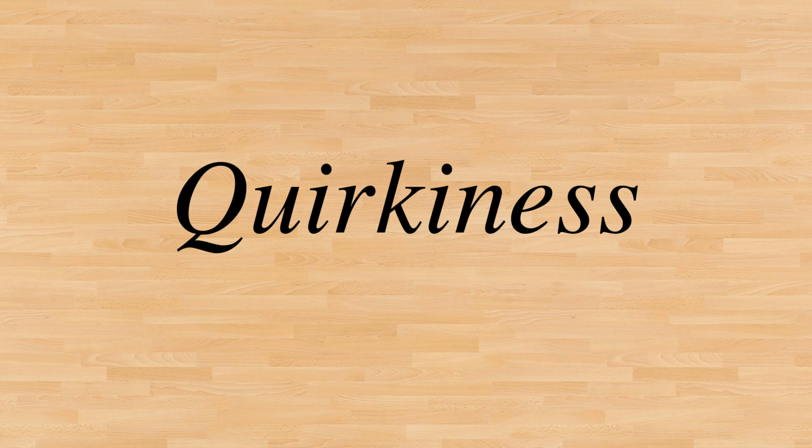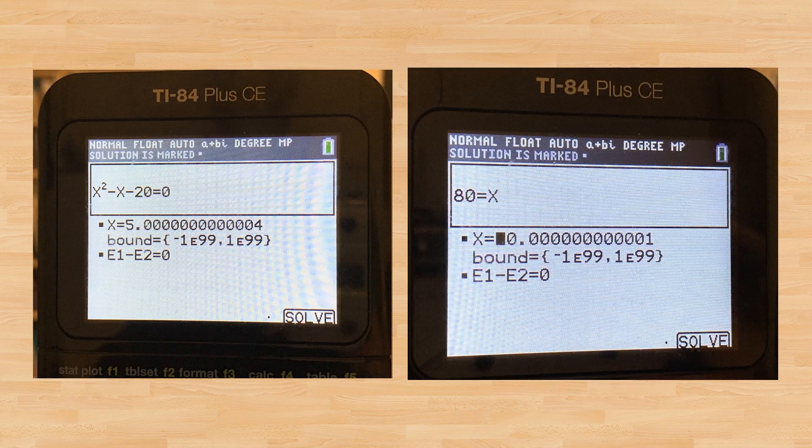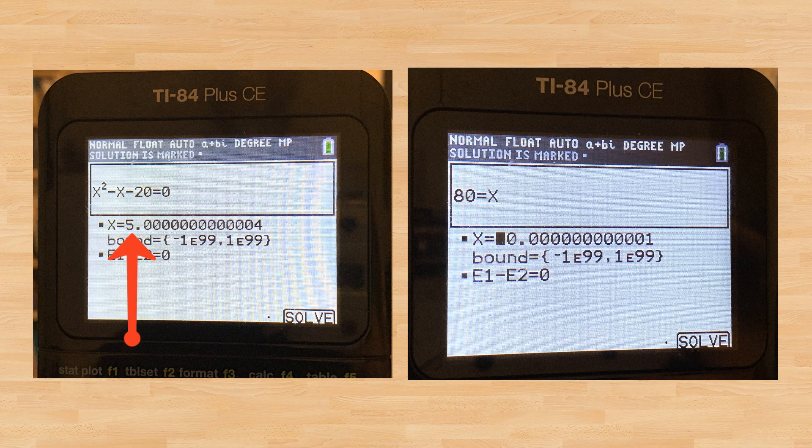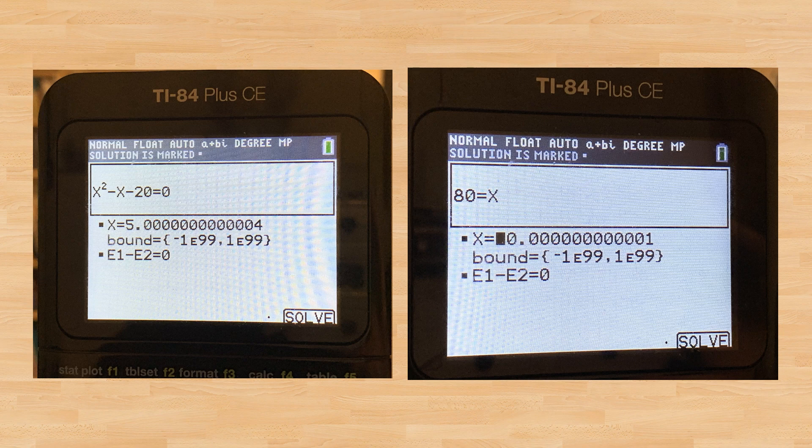Sometimes you might get an error that looks like this, and this is what we call round-off error. It's a product of the process and the circuits of the calculator that is unfortunately making it not look like an integer. So you can just either round up or round down from an answer like this if this is something that you get on your calculator.